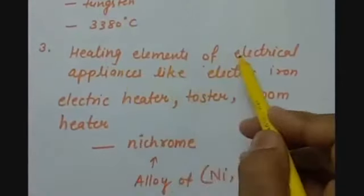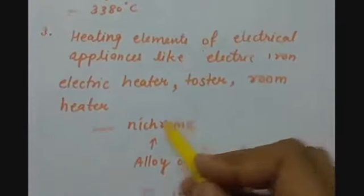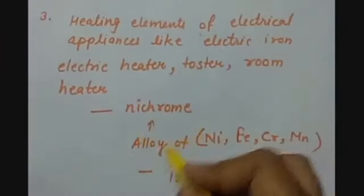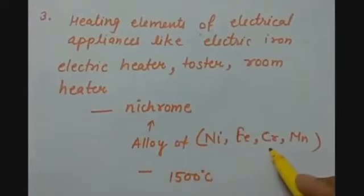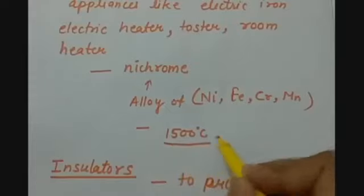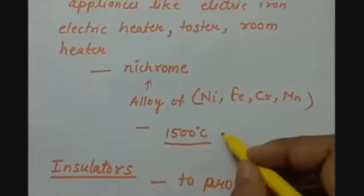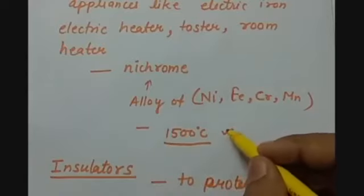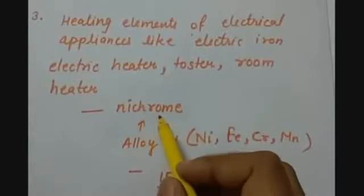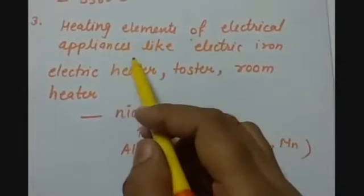The next is that heating elements of electrical appliances like electric iron, electric heater, electric toaster, and room heaters are all made with nichrome. Nichrome is an alloy of nickel, iron, chromium, and manganese. It has a very high melting point of 1500 degrees Celsius. Because of this very high melting point, this alloy can be used to make heating elements of electrical appliances.